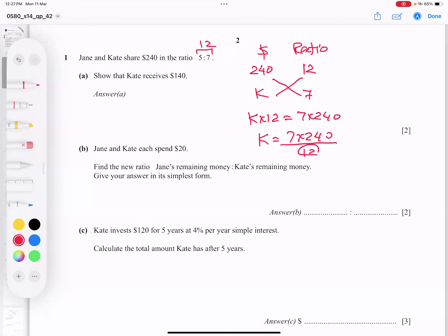24 to the 12. It's giving us 20, 20 into 7, 140 matching. So Kate's amount is proved $140. So this is done. And naturally, if from 240, if I subtract 140, so the Jane's amount becomes automatically $100.